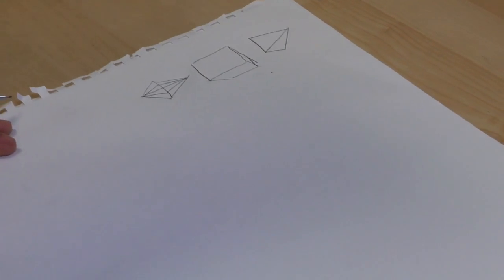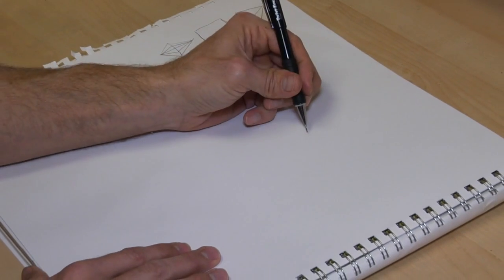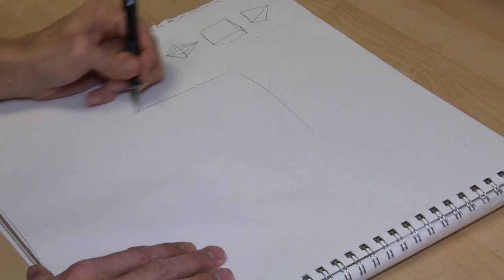Now, the thing about geometric line art is usually it creates a pattern of some kind. So you use these elements and create a pattern that's sort of dynamic.